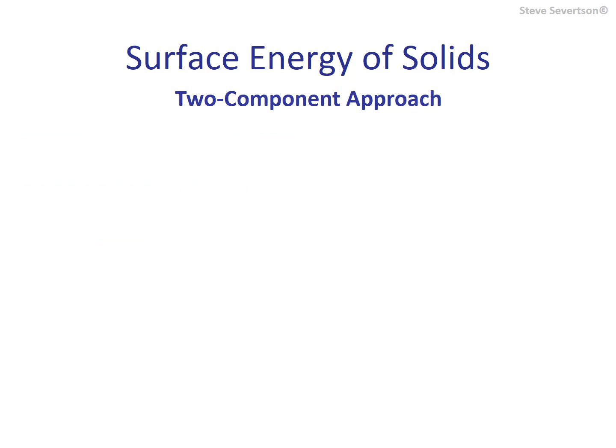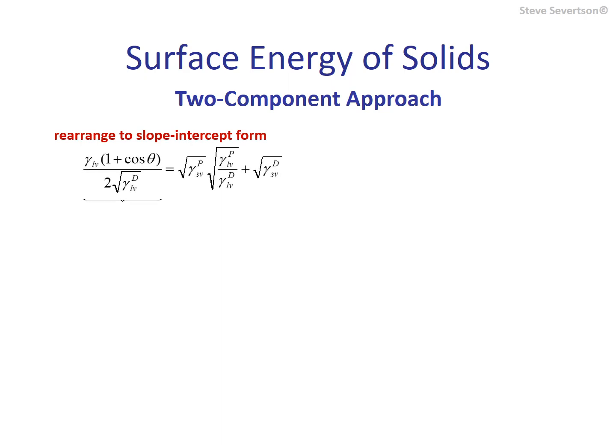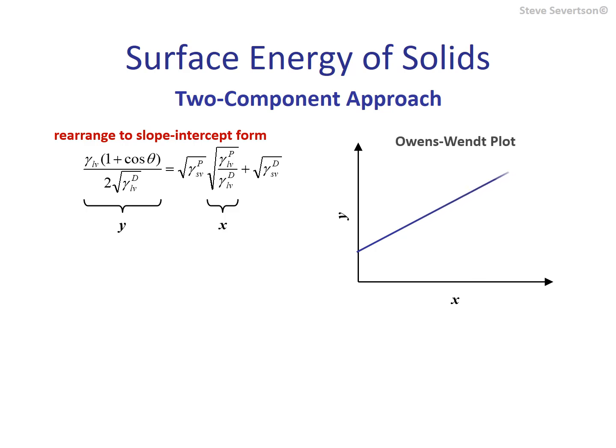This last equation can be rearranged into slope-intercept form. Using known or determined polar and dispersive components for the probe liquids and the measured contact angles on the surface of the solid, the so-called Owens-Wendt plot can be constructed. For liquids, surface tension measurements only provide the total surface tension, not the polar and dispersive components. These values must be obtained from the literature or they must be measured.